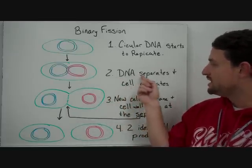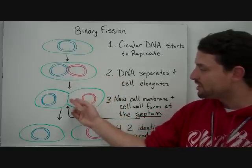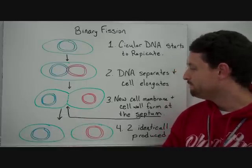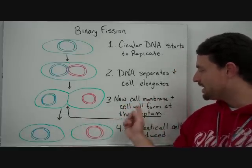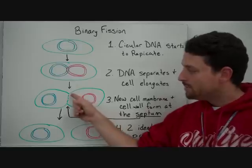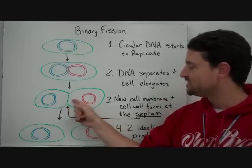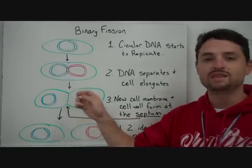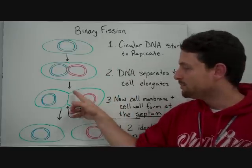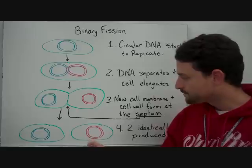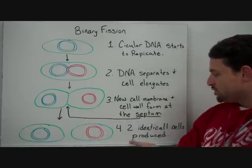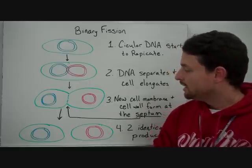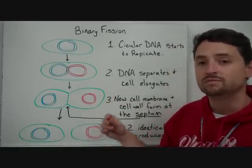Then eventually the DNA will separate from each other and the cell will elongate or grow so that it's ready to divide. The cell membrane and cell wall will form at an area called the septum, which pinches across through the middle. Eventually you end up with two identical cells produced by binary fission — in essence, they're making clones of themselves.